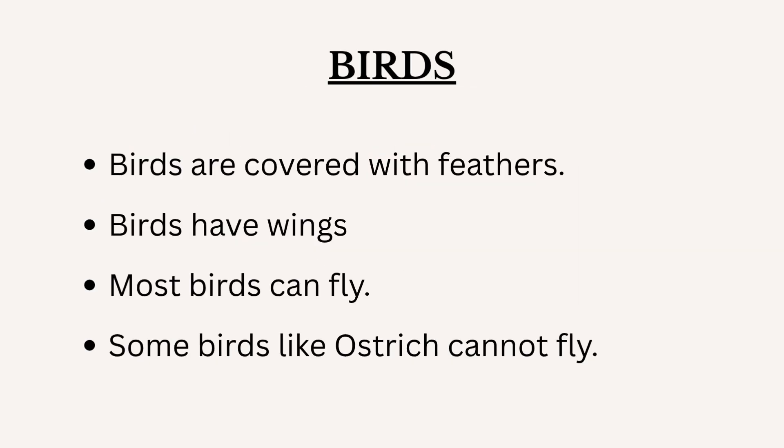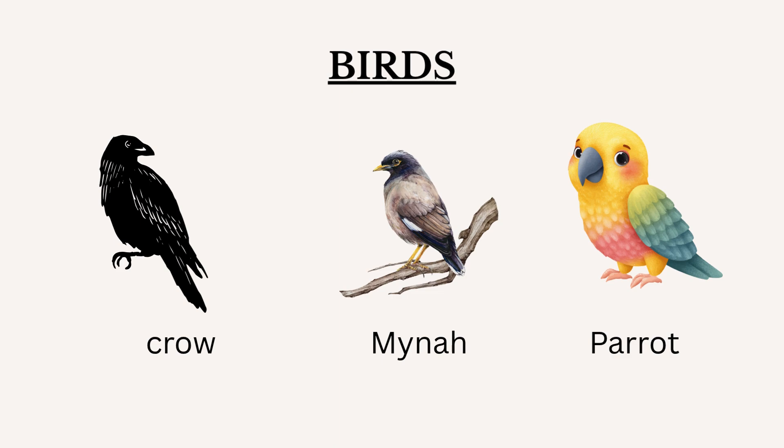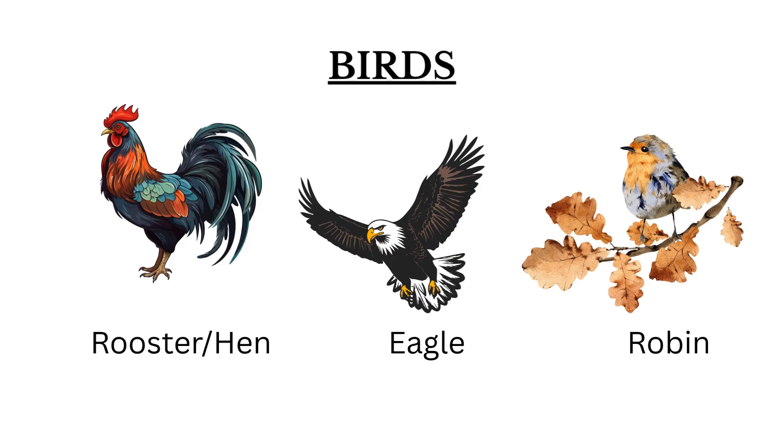Birds are covered with feathers and have wings. Most birds can fly. Some birds, like the ostrich, cannot fly. A few examples for birds are crow, myna, parrot, hen, rooster, eagle, and robin.